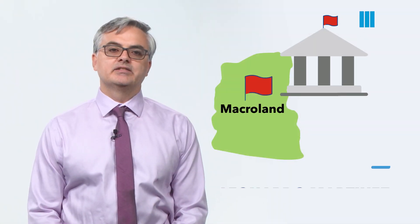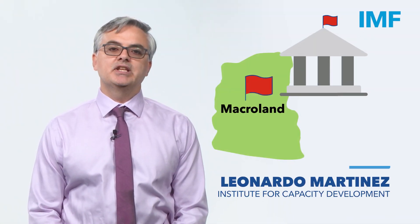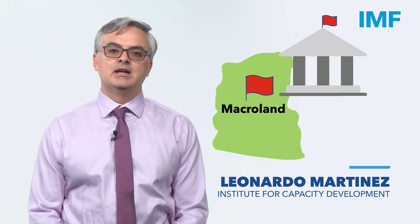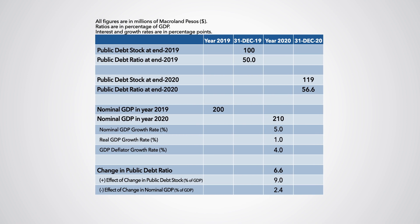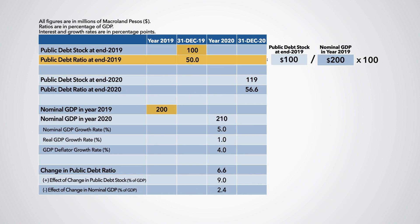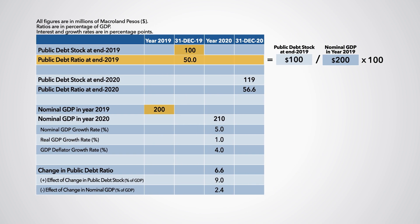The Ministry of Finance of a hypothetical country, Macroland, asked us to use the information in this table to explain what accounts for the projected increase in Macroland's public debt-to-GDP ratio. Note the following: the public debt stock at the end of 2019 was 100 million Macroland pesos and 50% of the 2019 GDP.